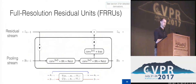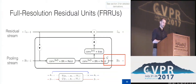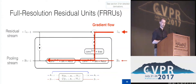Inside a full-resolution residual unit, first we reduce the spatial resolution of the residual features and concatenate them with the pooling features. Then we feed these concatenated features through two convolutional units, each consisting of a 3x3 convolution, a batch normalization layer, and a rectified linear unit. This forms the output on the pooling stream, which is fed into the next FRU on the pooling stream. To compute the full-resolution residual, we add a 1x1 convolution and an unpooling step. All weights in the unit can make use of the strong gradient flow, even though we operate like a normal sequential feed-forward network on the pooling stream.